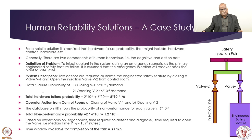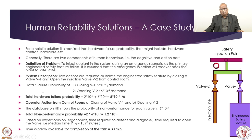Now let us take one simple case study that addresses all salient features of HCR. The problem is: safety injection is required at a certain point. We require injection of water at this point so that the main system is safe. The primary option is that an engineered safety feature has been provided, and 99% of the time the system will come automatically — valve V1 will open automatically from the control room and injection will occur.